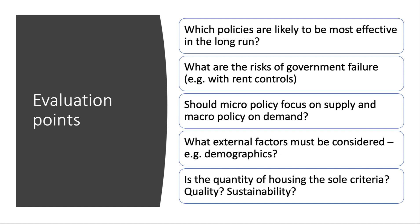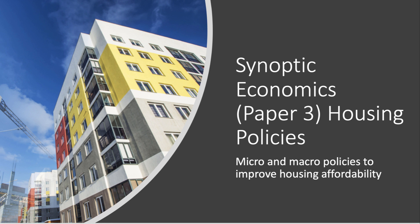Is the quantity of housing the sole criterion? Most of the policies discussed have been about increasing housing supply, but what about the quality of homes, their overall size? And crucially, if you're interested in environmental economics, to what extent should micro and macro policies really focus on sustainable housing policy rather than just purely the number of new homes being built? This slide shows some of the evaluative approaches you could use as part of your final reasoned conclusion — so there we go, a quick video on micro and macro policies designed to improve housing affordability.